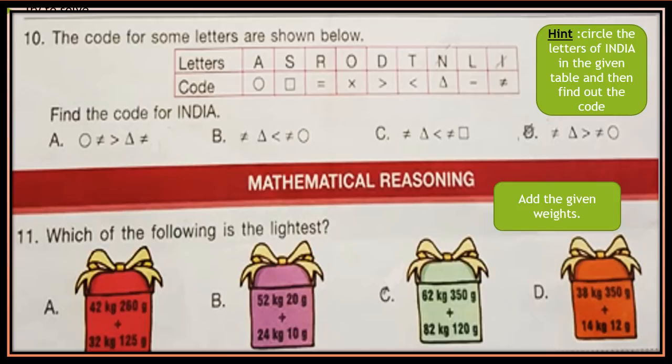Question 11: Which of the following is the lightest? See the options A, B, C and D — weights are given. Calculate the total weight for each option and then choose which is the lightest. Add the given weights and then choose.